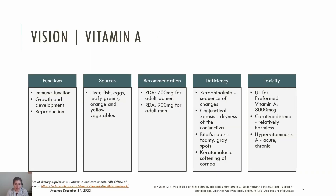Vitamin A is a group of fat-soluble retinoids. Vitamin A has many crucial functions including immune health, growth and development, cellular communication, and reproduction. Vitamin A is critical during fetal life for formation and maintenance of the heart, lungs, and eyes, and also for vision. Vitamin A can be found in liver, fish, eggs, leafy greens, orange and yellow vegetables, and tomato products.